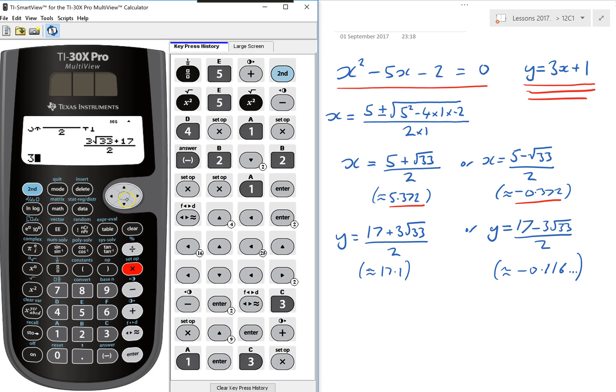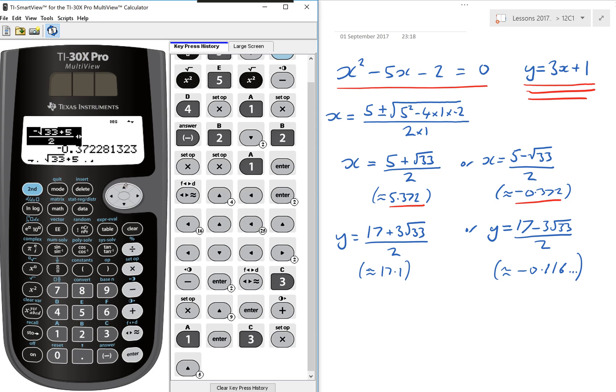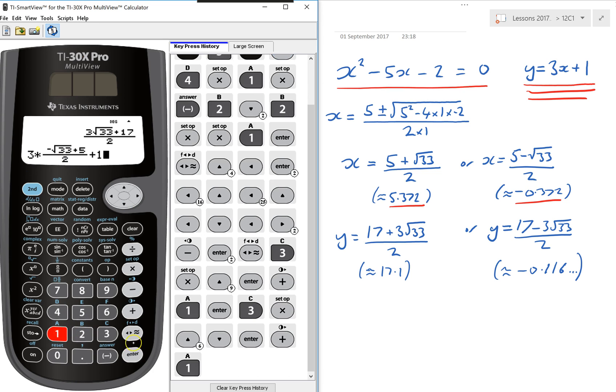And then obviously I want to do the other one. So I'm going to do 3 times. And I'm going to go back up until I find the one with the negative. That's the one I want. So 3 times that. Plus 1. And it gives me that value, which is what I've got here. Minus 3 root 33 plus 17 over 2.